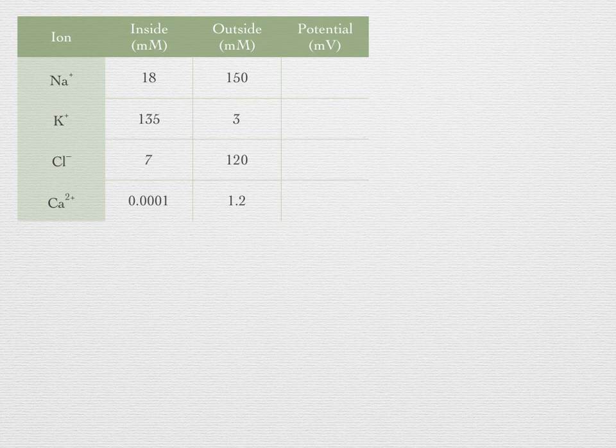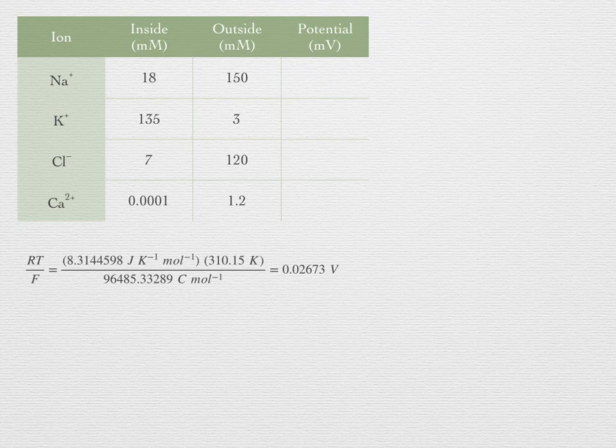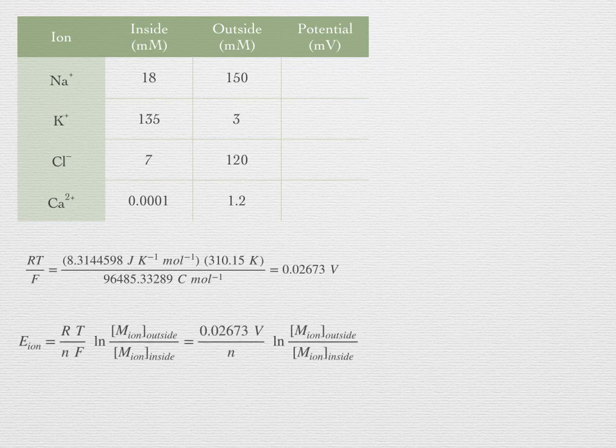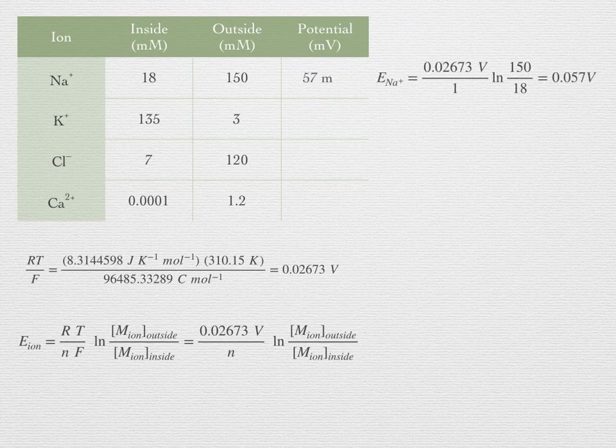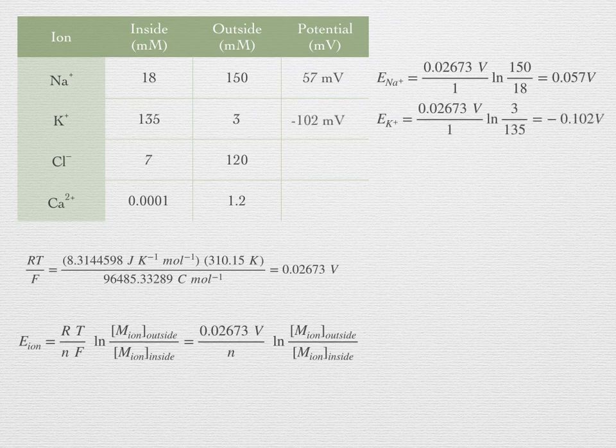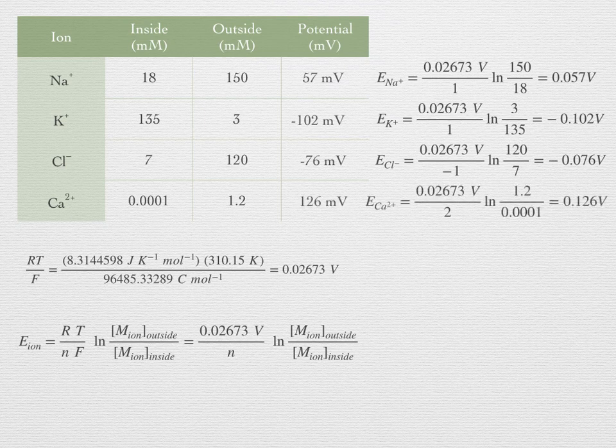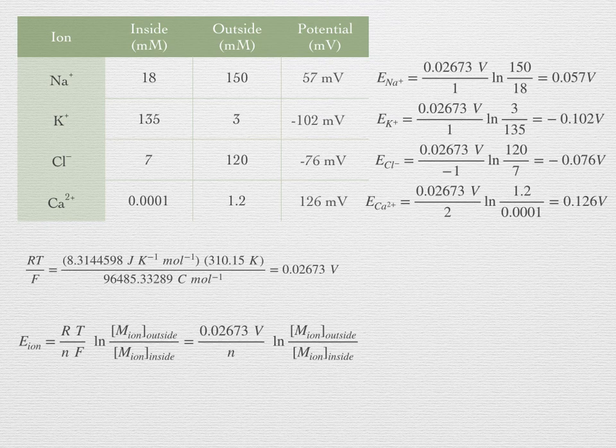First of all, we have to recalculate the term RT over F because the temperature is now 37 degrees Celsius, which is body temperature, rather than room temperature. 37 Celsius is 310 Kelvin. RT over F then is equal to 0.02673 volts at this temperature. Because we are calculating the potential relative to the outside of the cell, we write the following for the Nernst equation. Now, calculate the potential generated by each ion. In the case of sodium, we have 0.02673 times the ln of 150 over 18 or 0.057 or plus 57 millivolts. For potassium, we have minus 102 millivolts. For chloride, we note that we now have a negative ion, so we must include a negative sign. It is minus 76 millivolts. Finally, for calcium, we note that it has a valence of 2. We obtain plus 126 millivolts.